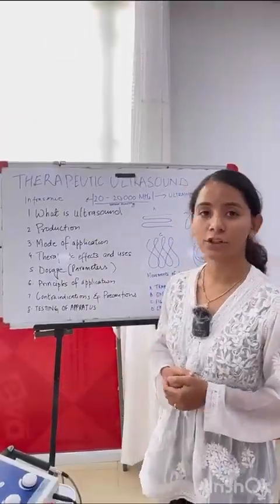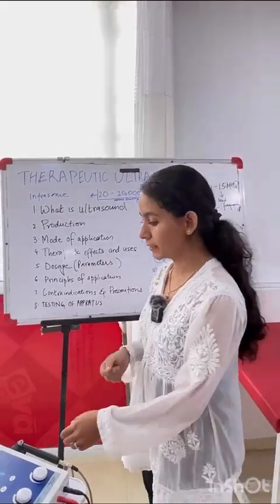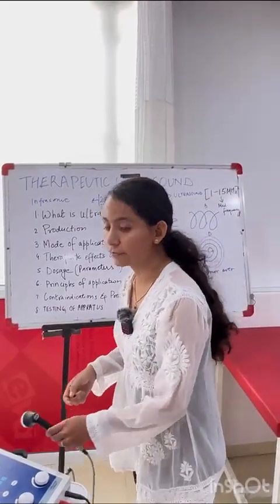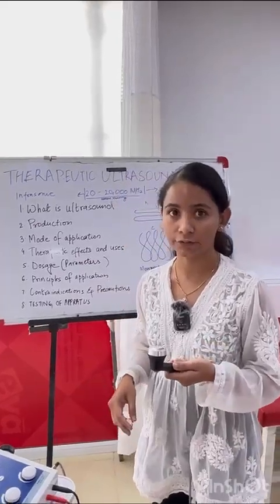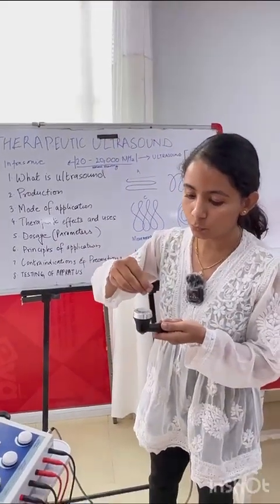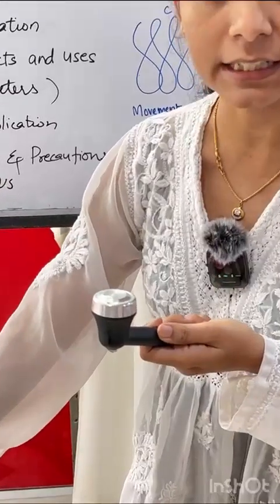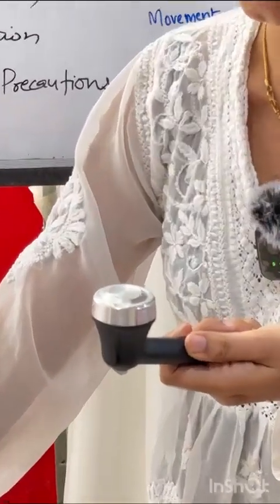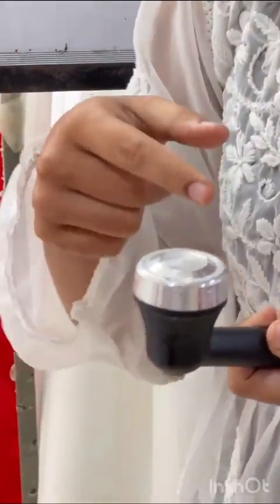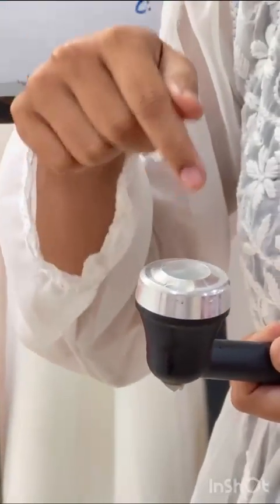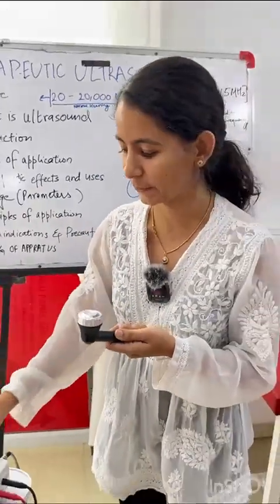Now let's talk about testing of the apparatus. For testing, we set different parameters on the machine, take the head of the ultrasound, put water on the head, and increase the intensity to check for ripple formations on the head of the ultrasound. If ripple formations are present, that means the machine is working.